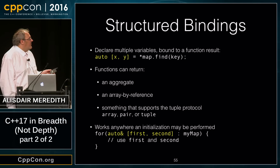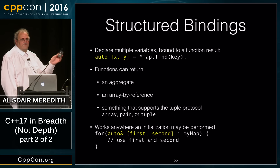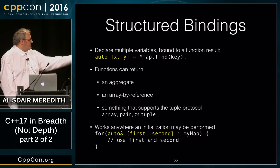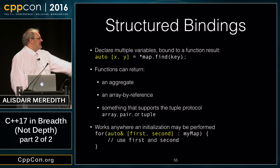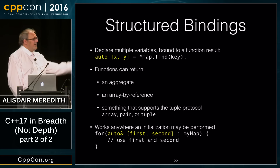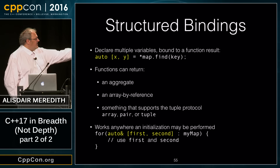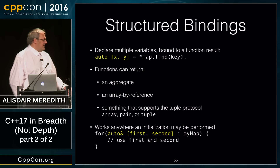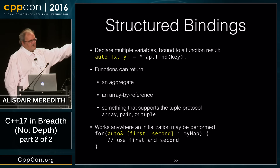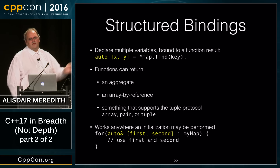Structured bindings work anywhere initialization may be performed. For example, in a range-based for loop over a map, using `auto& [first, second]`, I now have first and second variables directly usable. Using auto reference ensures I get references — a const reference to first and a regular reference to second.